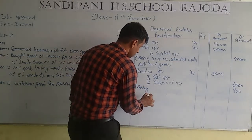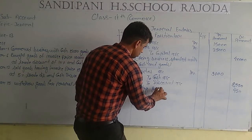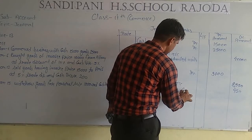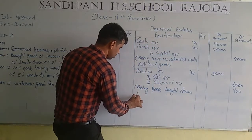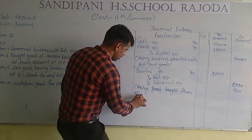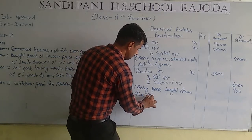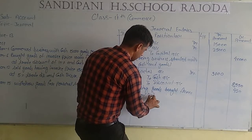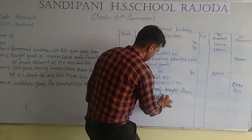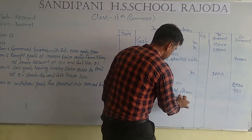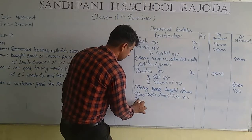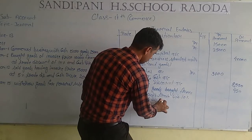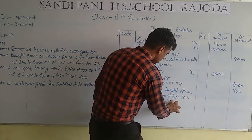In the narration we will write: Being goods bought from Abhay with trade discount 10% and cash discount 5% received.